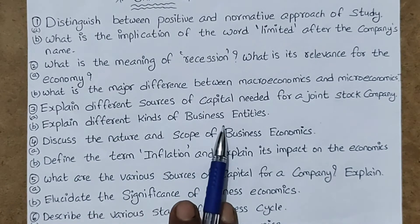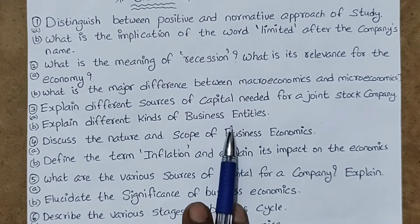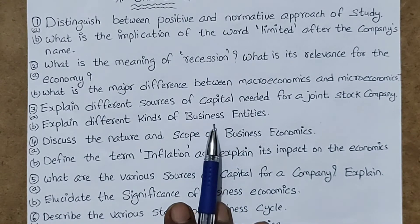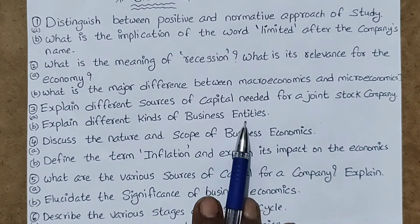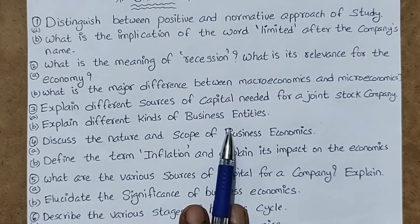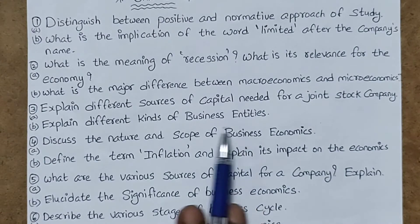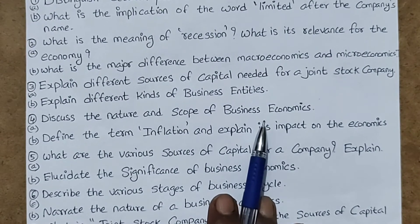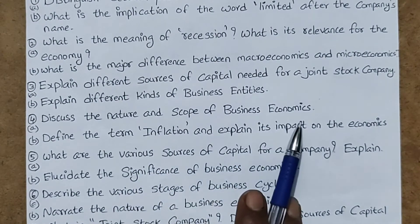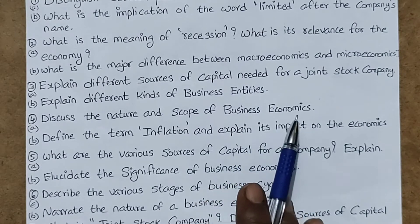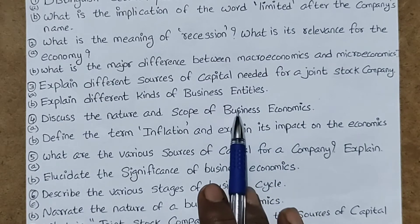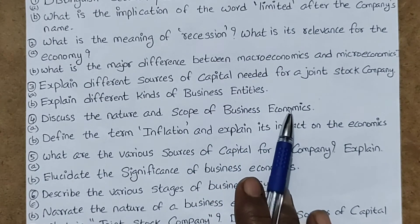Next question: explain different kinds of business entities. So what are the various entities related to this business? First, write the definition and meaning of 'entity.' Until and unless you don't write all these things, the examiner cannot understand what is going on in your mind. You have to give your best presentation, especially for Business Economics and Financial Analysis. Next: discuss the nature and scope of business economics. First explain what is business economics and how this economics is related to business. Then write what is the scope of business economics — how it is useful for your company or your business.